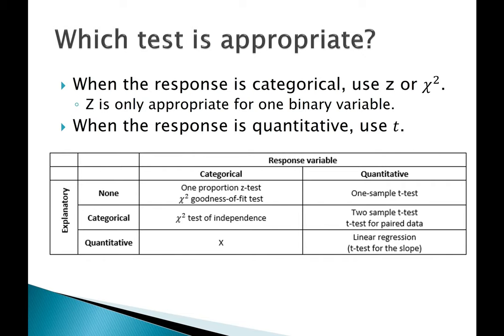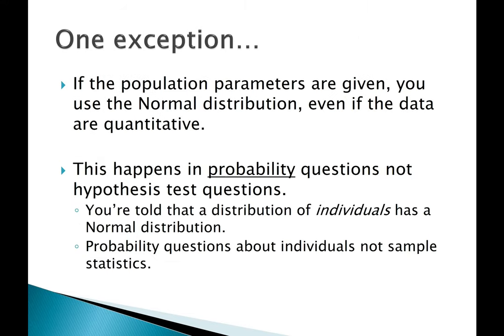Notice that when the response variable is categorical, you're always going to use z or chi-square, with z being the appropriate choice for one binary variable. When the response variable is quantitative, you use t. There is one exception: if population parameters are given, you use the normal distribution even if the data are quantitative. This happens in probability questions where you're told a distribution of individuals has a normal distribution.